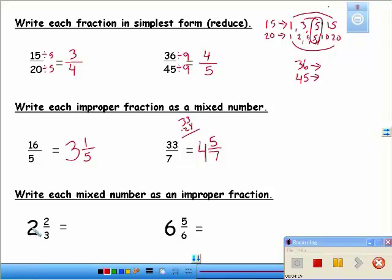So 3 times 2, 6, plus 2, 8. And as always, the denominator stays the same. So over on this one, we're going to multiply, add, multiply, add: 6 times 6, 36, plus 5, 41. And as always, the denominator stays the same. Okay, so that is fractions.